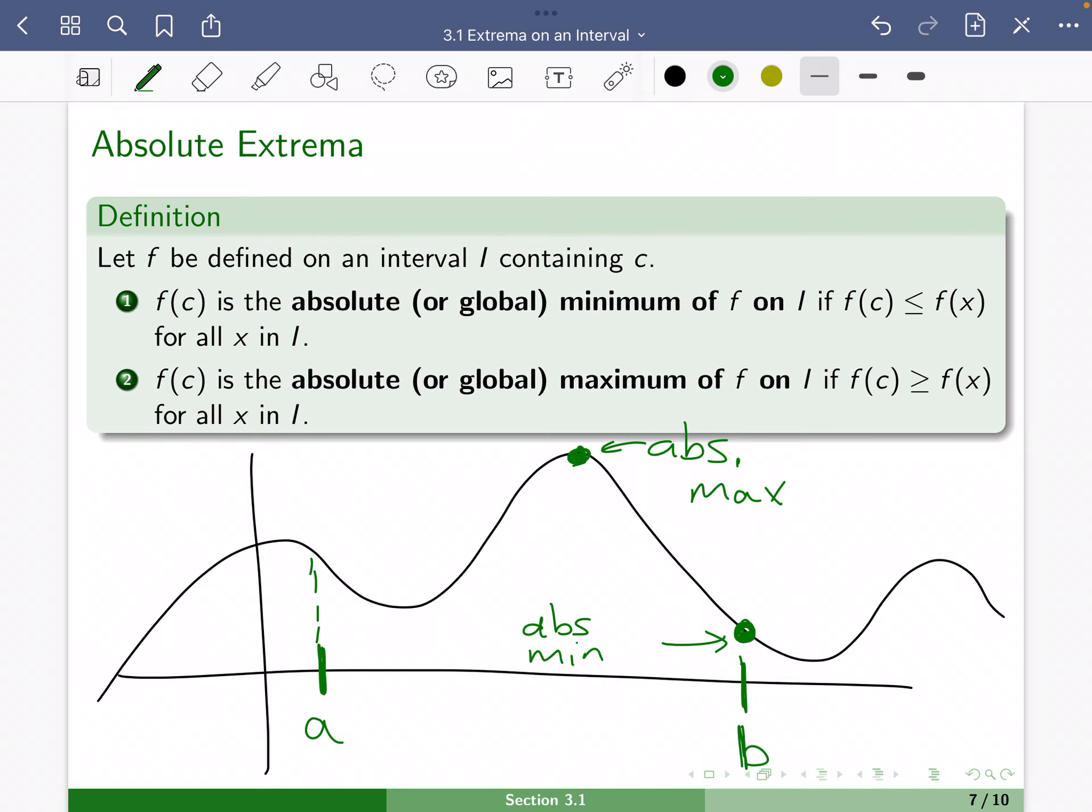So if we are only looking at values between a and b, then our function value has an absolute largest value right there and an absolute smallest value right there. That's what we mean by absolute extrema.